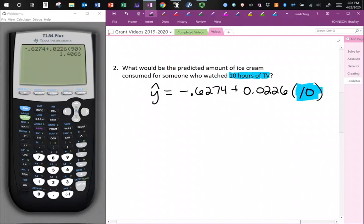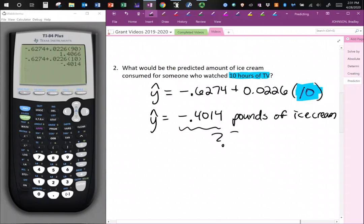So then I'll show you a trick on the calculator. You can hit second, enter, and it rewrites everything we already did. So then I can just use my arrow and type in 10. Now y hat equals negative 0.4014. And this is pounds of ice cream. And can you have negative pounds of ice cream consumed? That doesn't make sense, right? So I'm putting question marks. It doesn't make sense.